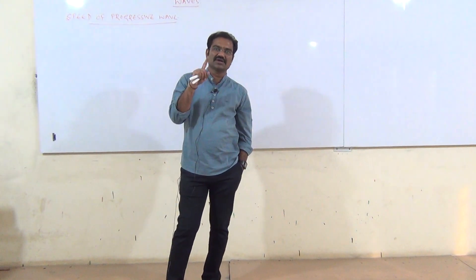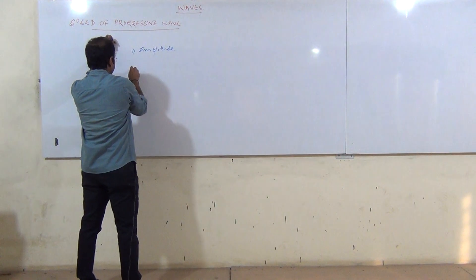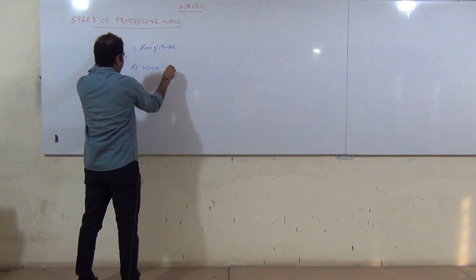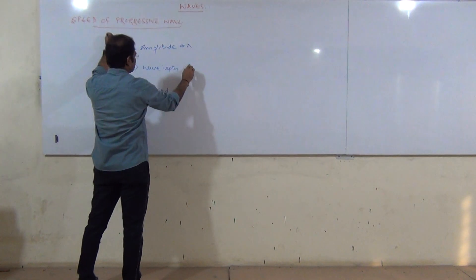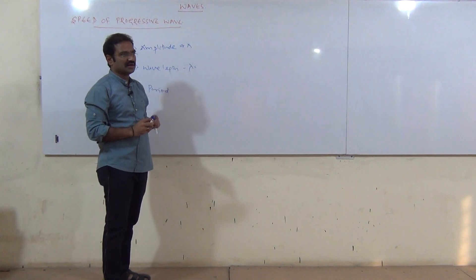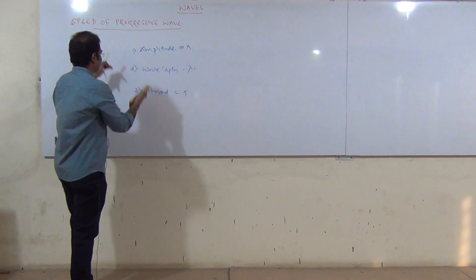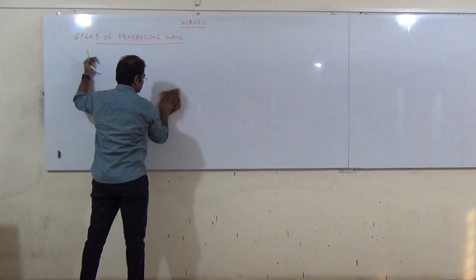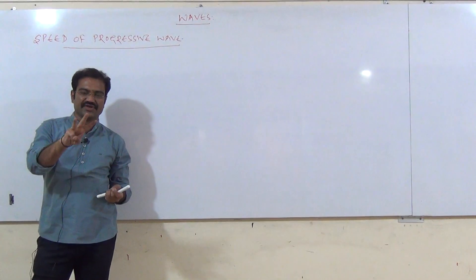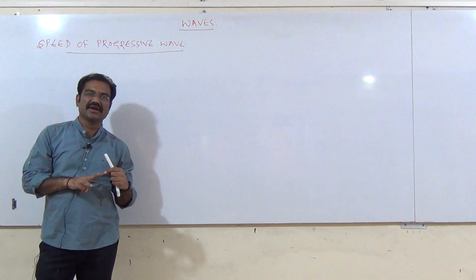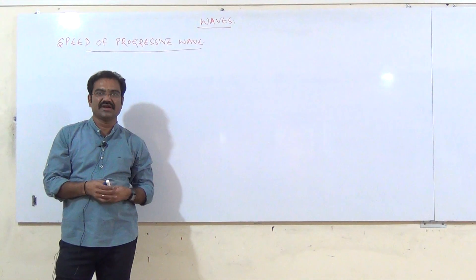From the previous class, we discussed amplitude (A), wavelength (λ), and period (T). Today's discussion is the speed of the progressive wave. First, we take a general discussion of the speed of the progressive wave, then the speed of a transverse wave, and the speed of a longitudinal wave. I am going to explain all three of them.